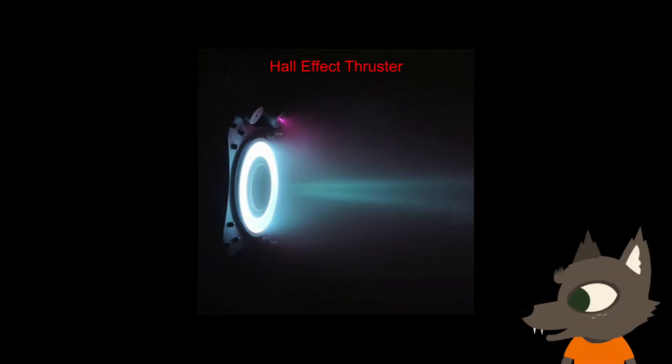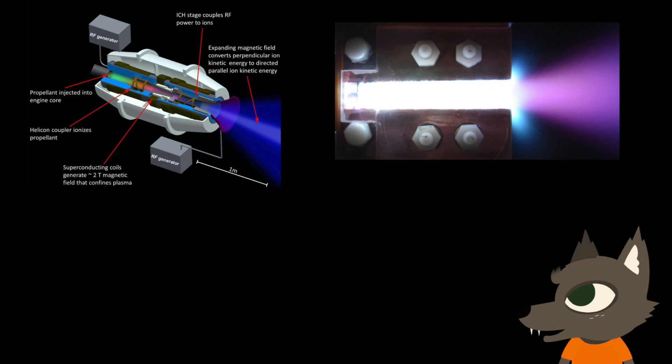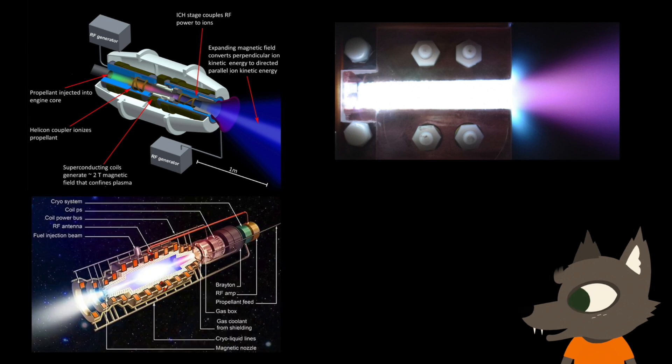Hall effect thrusters, for example, work similarly to gridded ion thrusters, but use trapped electrons in the acceleration region to stop incoming ions from being repelled. Other technologies such as pulsed plasma rail guns, microwave powered thrusters, and even nuclear fusion powered thrusters are being investigated, but these are all topics for another video.